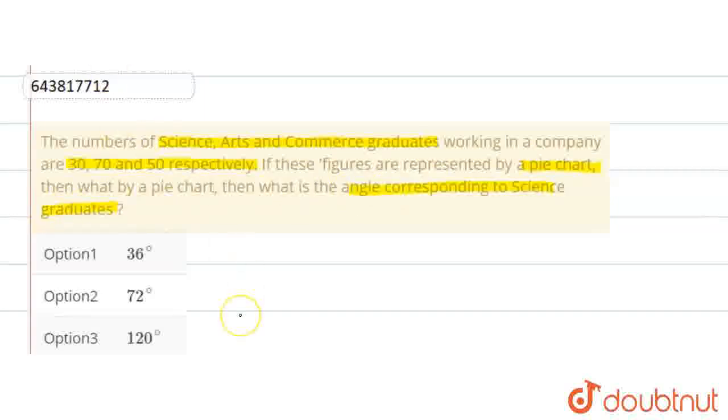Here, we have the number of science, arts and commerce graduates, number of students. And we have been asked to convert this data into a pie chart. So, we have to represent the students in science, arts, and commerce.